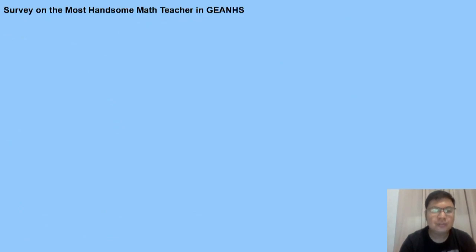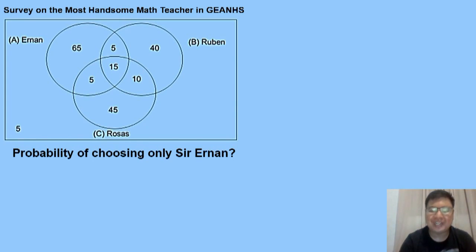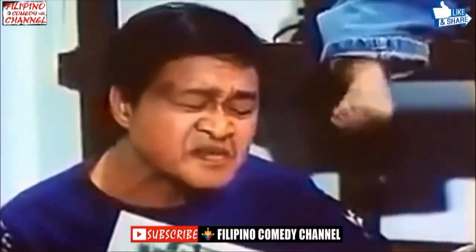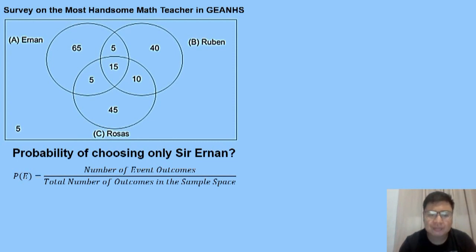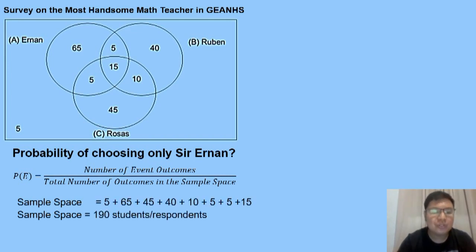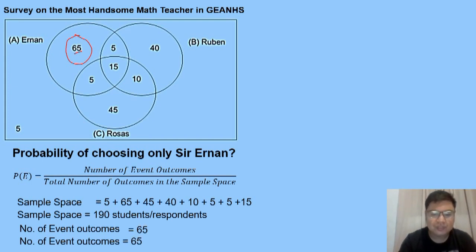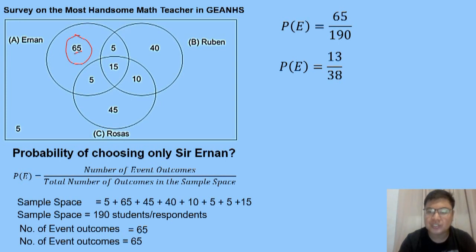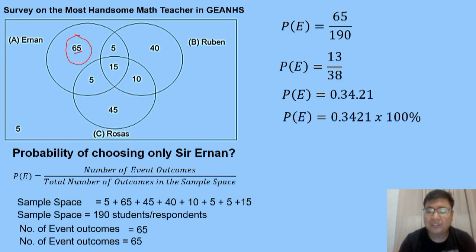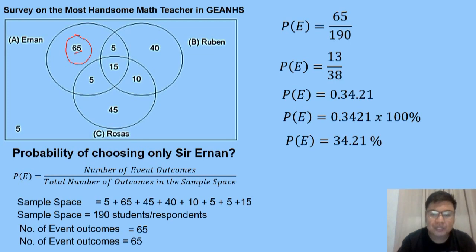Next problem: probability of choosing only Sir Ernan. Using the same probability formula, sample space is still 190. Only Sir Ernan was chosen, so we take the exclusive portion of his circle, which is 65. Substituting: 65 over 190, lowest term is 13 over 38, which equals 0.3421 or 34.21% — that's the percentage of students who chose only Sir Ernan.